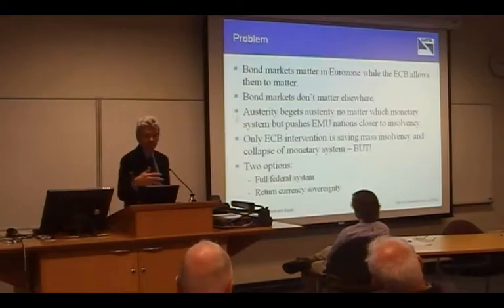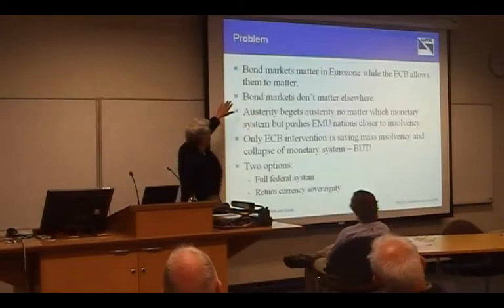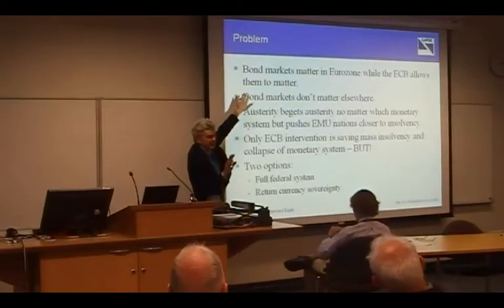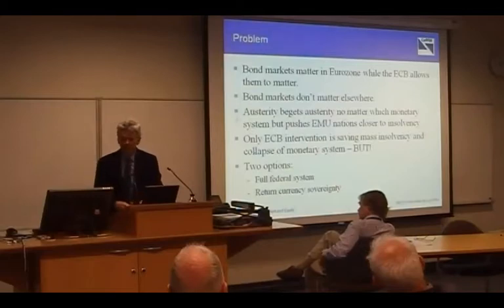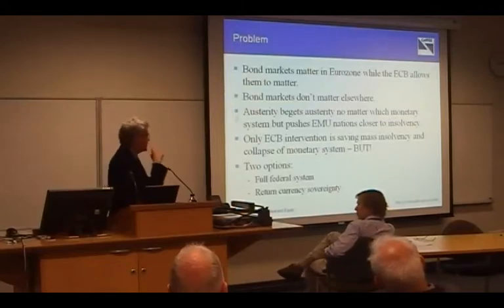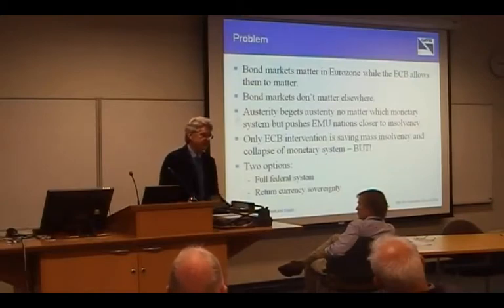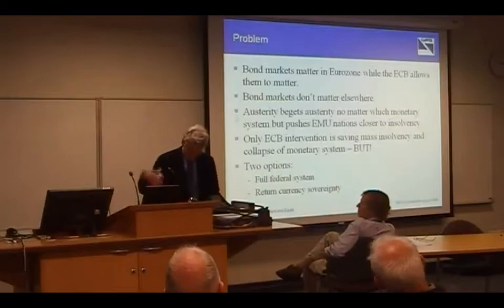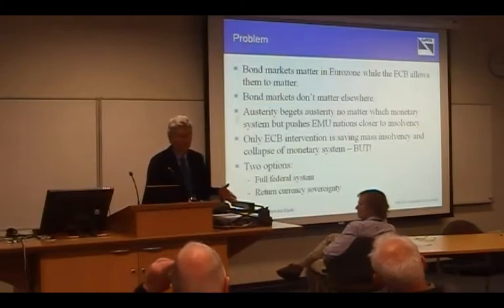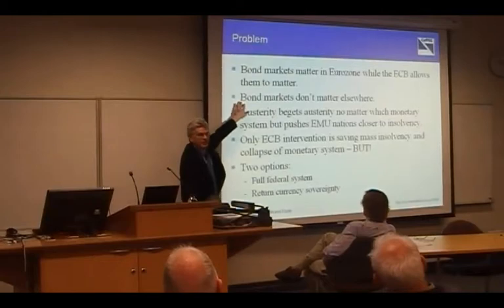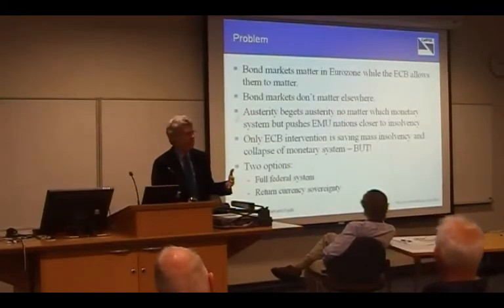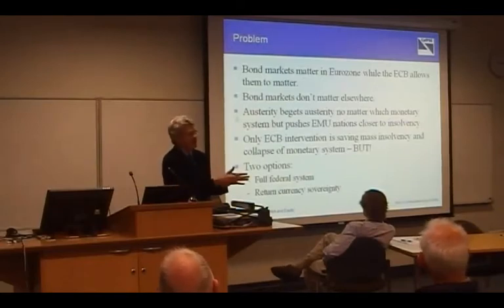Bond markets only matter while the European Central Bank allows them to matter. As we've seen recently, the ECB has essentially played the bond markets out of the picture by buying up government debt in secondary bond markets, declaring the bond markets irrelevant even in that constrained situation. Bond markets don't matter anywhere else. In countries like Australia, bond markets are parasitic entities enjoying corporate welfare in the form of a risk-free annuity, because governments don't even need to borrow.